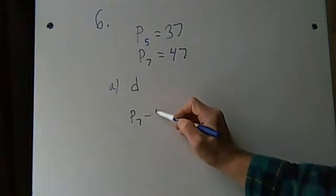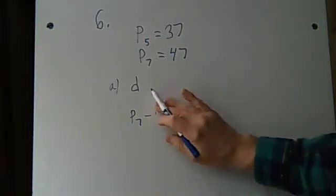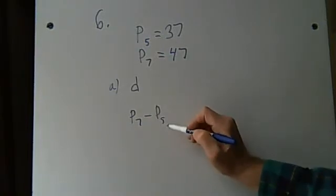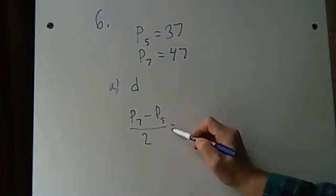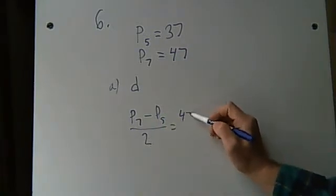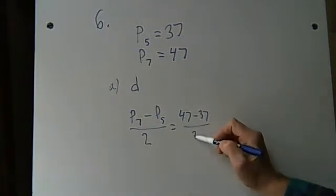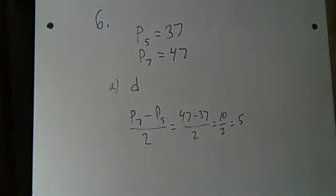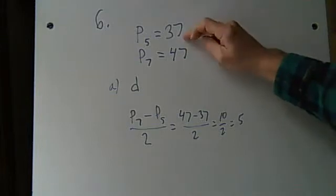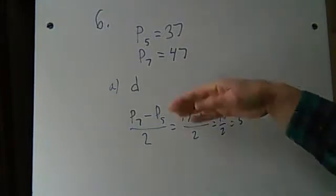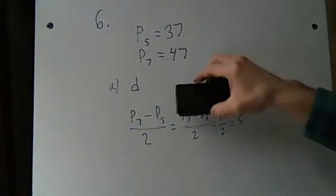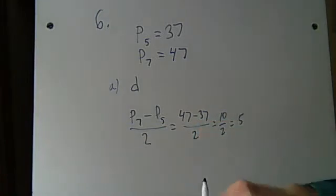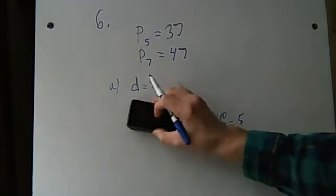P7 minus P5 divided by two. Or 47 minus 37 divided by two. It's ten over two, and that's five. In other words, P6 must have been 42, because it was just growing linearly. So you just take the difference, and then we get D equals five. Okay, great.